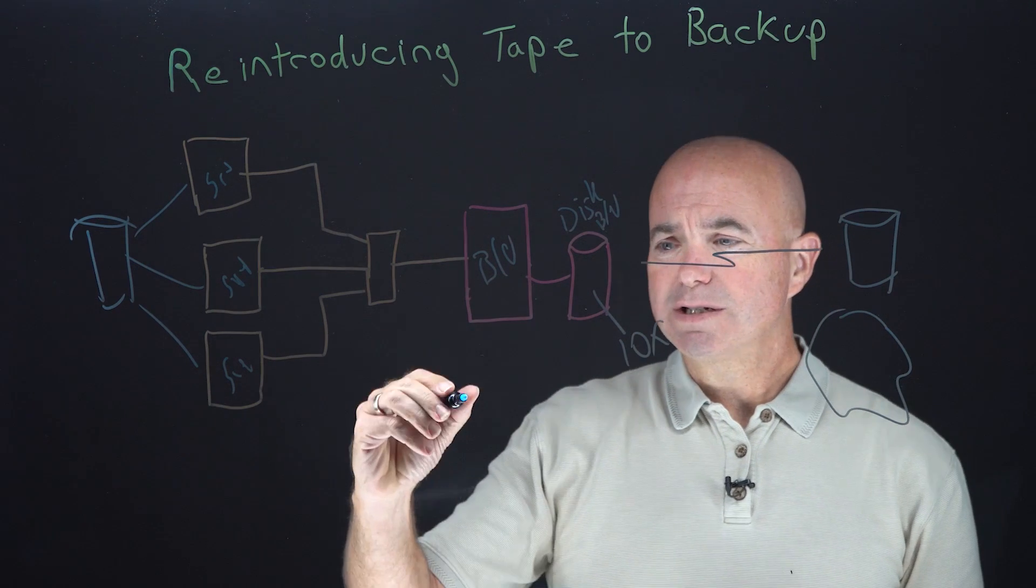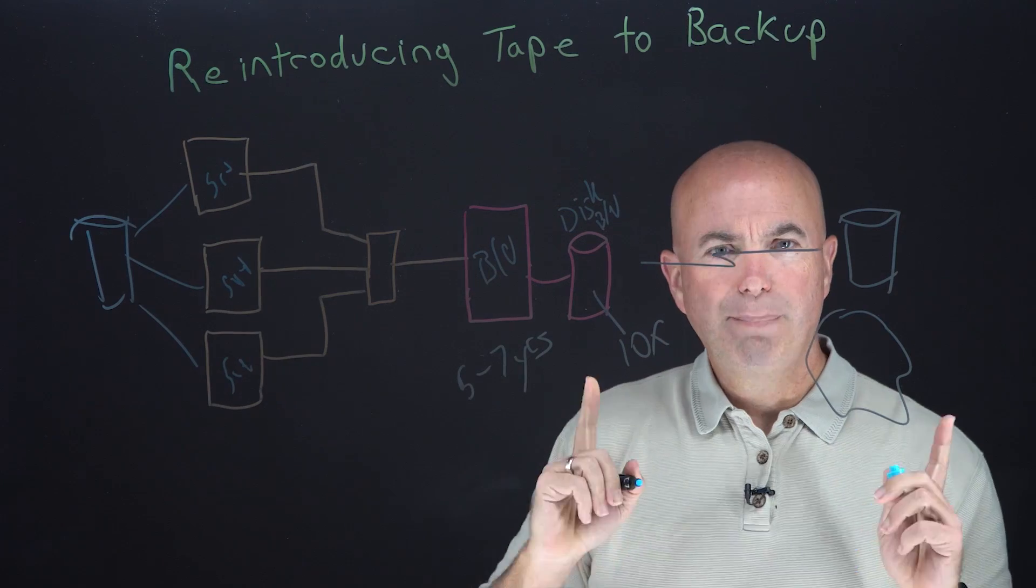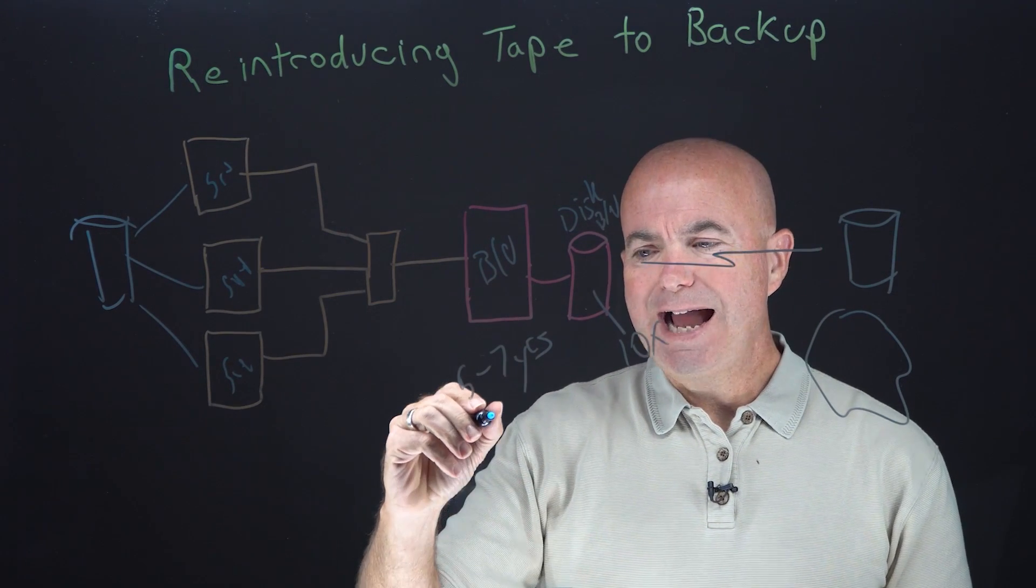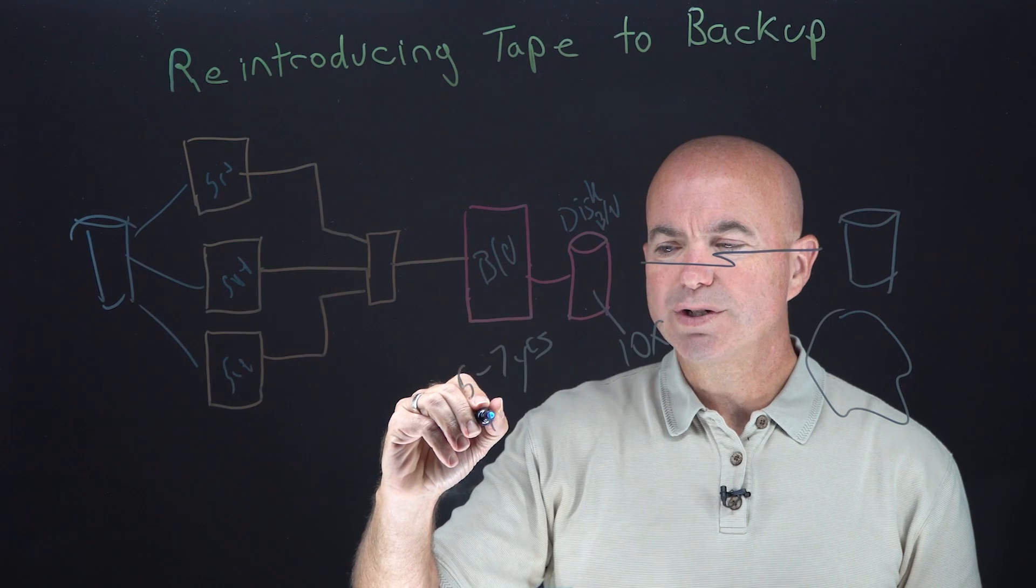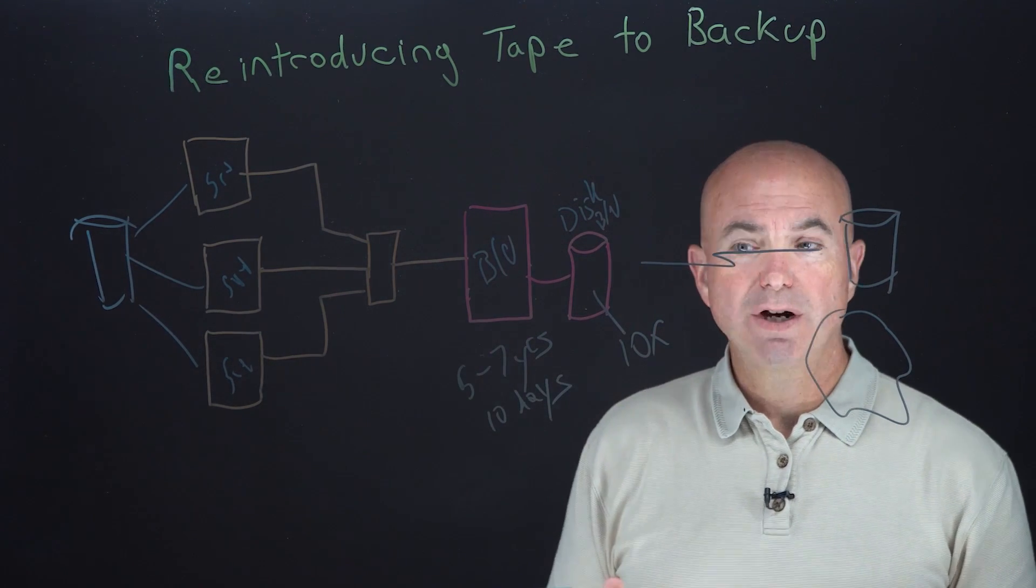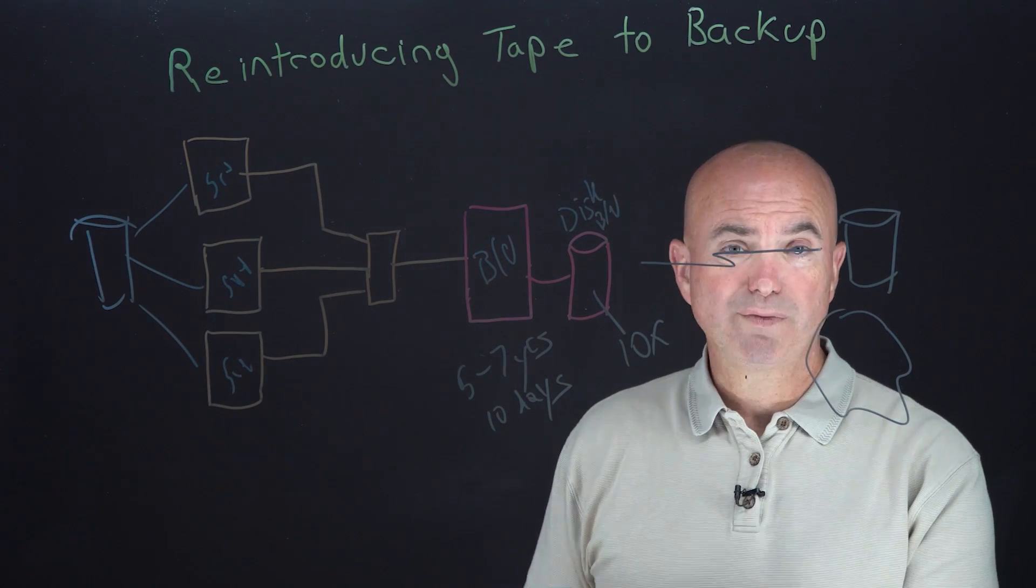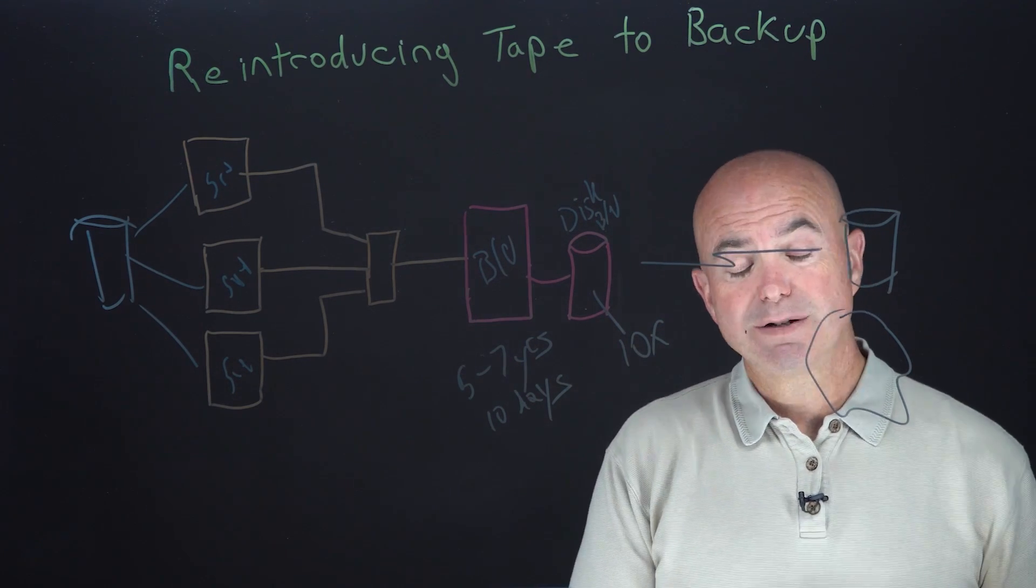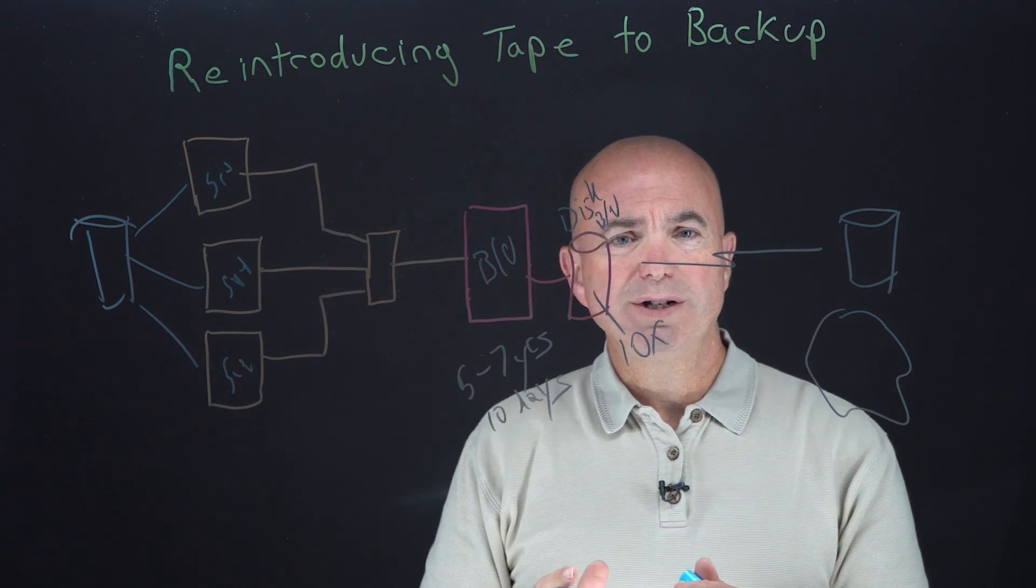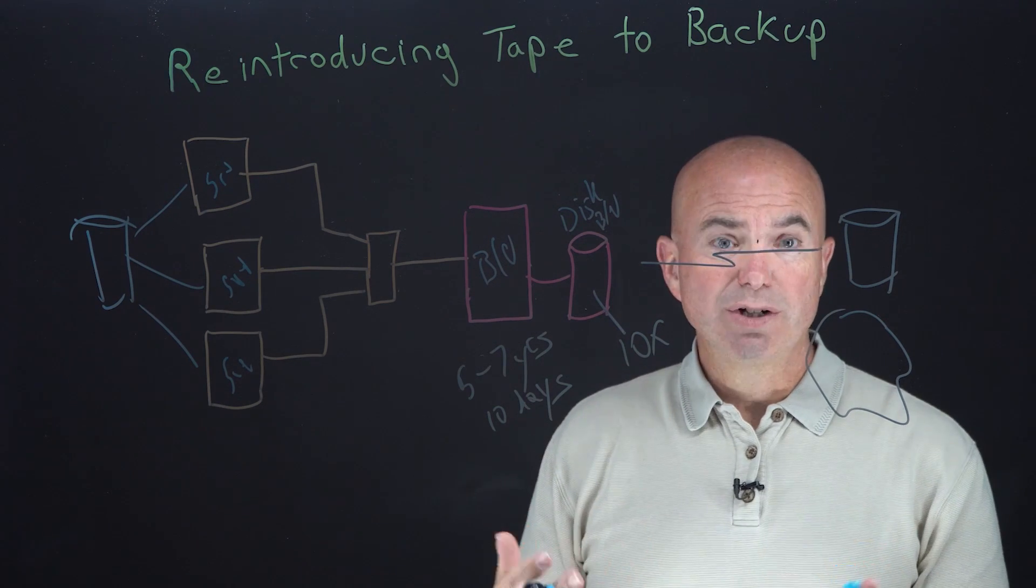Most organizations tend to keep their backups for somewhere between five to seven years. But most recoveries of data happen in the first 10 days of the backup actually occurring. Almost 95% of recoveries come from the most recent backup. And then it decays very quickly after that. So we're storing a lot of data on disk that will never be accessed again and it's always there just in case.